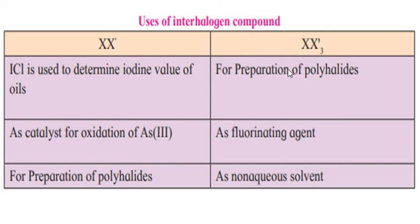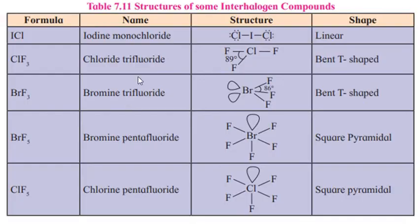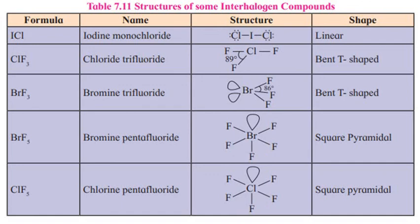The structures of some interhalogen compounds: ICl is linear; ClF3 and BrF3 are T-shaped; BrF5 and ClF5 are square pyramidal. A table (Table 7.11) gives their molecular formula, name, structure, and shape.